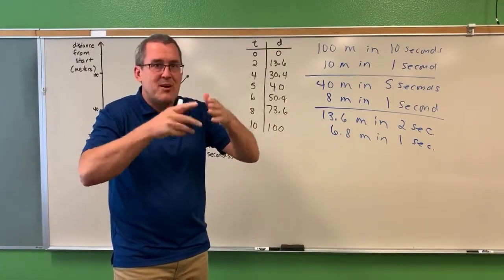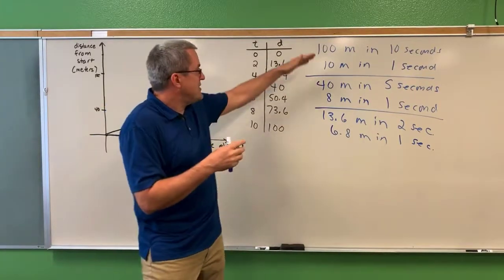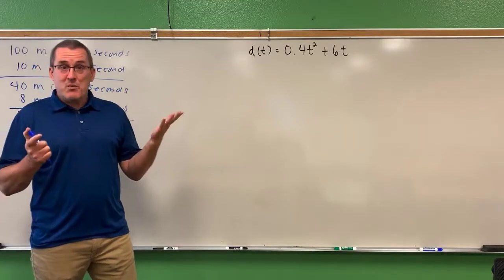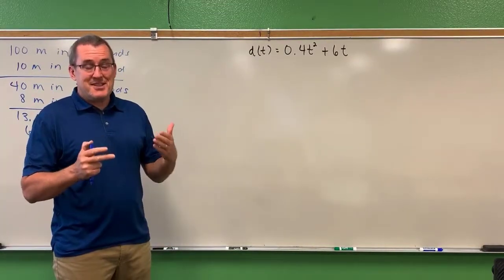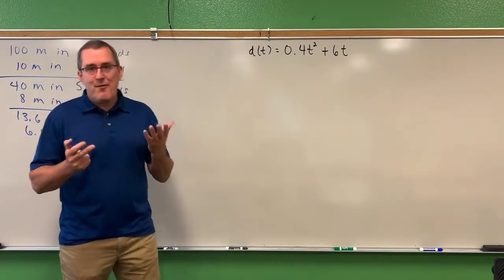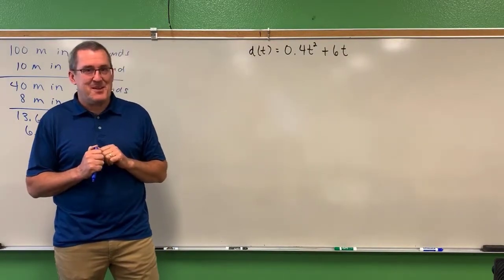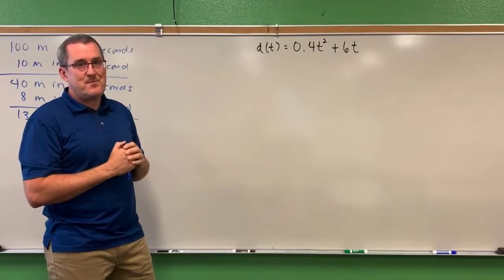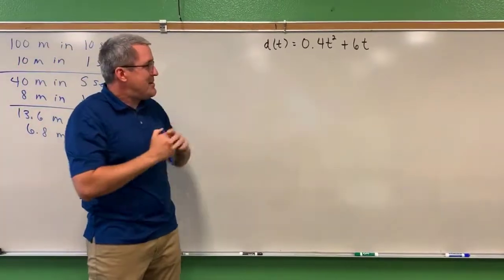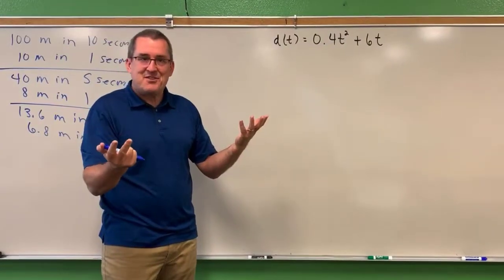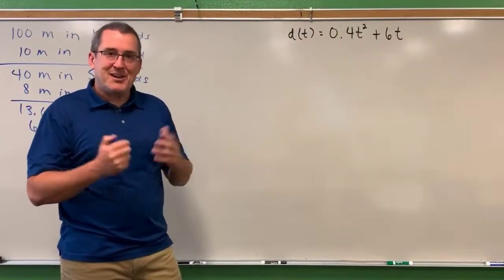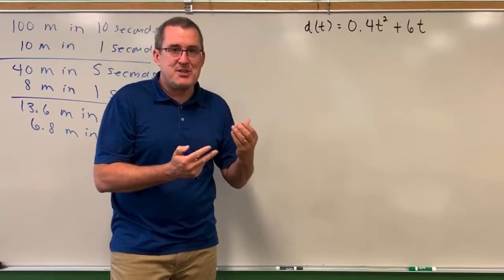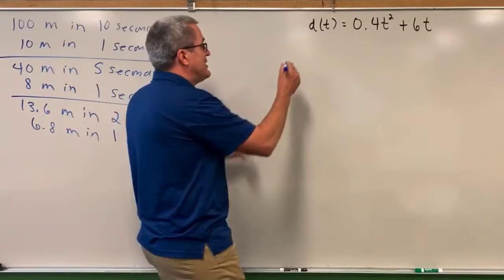We could narrow in and narrow in and narrow in — finding how fast he was running not over 10 or five or even two seconds, but at just an instant in time. To look at even smaller intervals, like the first one-tenth of a second, suppose we represent the data as a function. Because of that increasing speed over time, a quadratic function would work best. For the sake of this video, the quadratic function that models this situation is the one shown here.